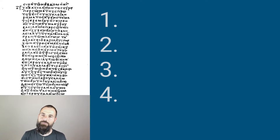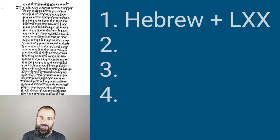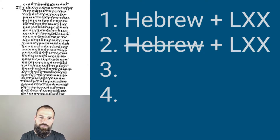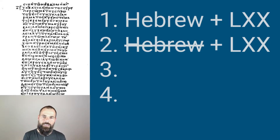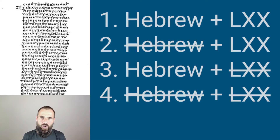There seem to be four distinct categories of Old Testament quotations in the New Testament. First, those that agree with both the Septuagint and the Hebrew text. Second, those that agree with the Septuagint but not the Hebrew text. Third, those that agree with the Hebrew text but not the Septuagint. And fourth, those that do not agree with either — but are close enough to one or both that we can identify them as quotations, sometimes introduced by a quotation formula.